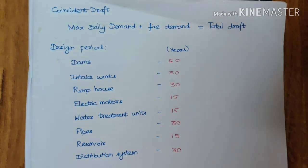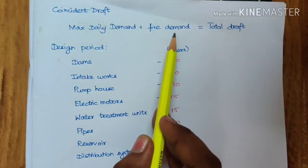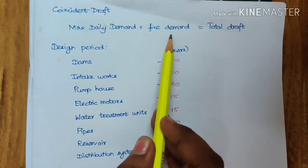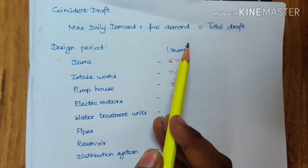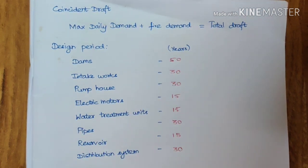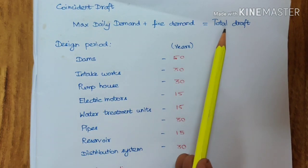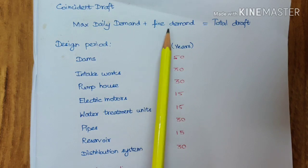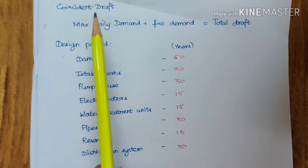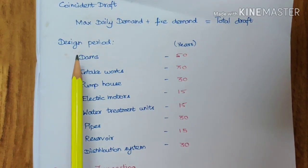The next concept is coincident draft. The total draft is taken as maximum daily demand plus fire demand, because a fire accident can happen at any time. If a fire occurs during peak hours — 8 to 11 a.m. or 7 to 9 p.m. — there won't be enough water. So maximum hourly demand should not be used here; instead, maximum daily demand plus fire demand gives the total draft, known as the coincident draft.